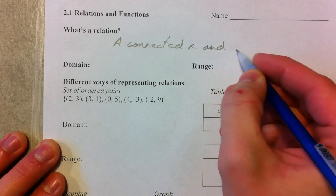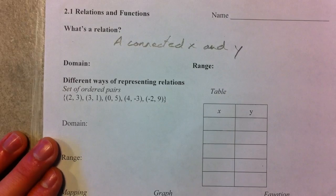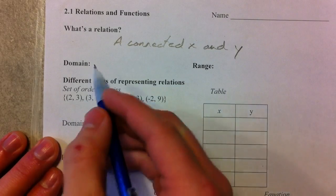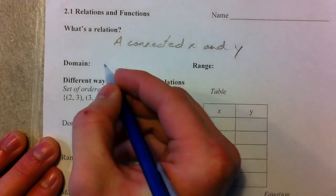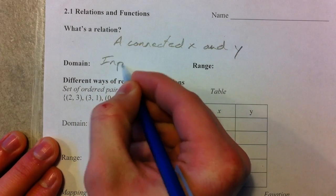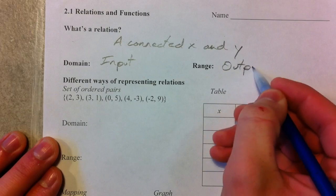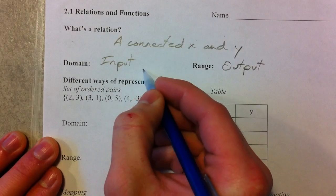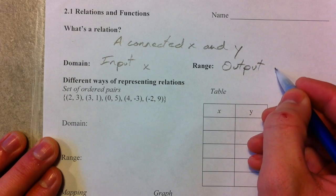And so we can represent a relation in multiple different ways, and we're going to talk about that. But big time about a relation is that it has a domain and a range, which is an input and an output. Something you put in, something you put out. Typically the input is the X's, typically the output is the Y's.